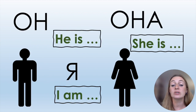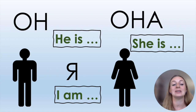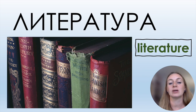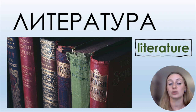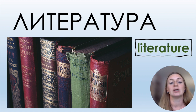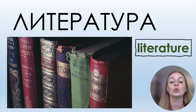Now you know three pronouns: Он, она, я — он, она, я. We had математика, and now we have литература — maybe you study literature or enjoy reading. Литература, литература.